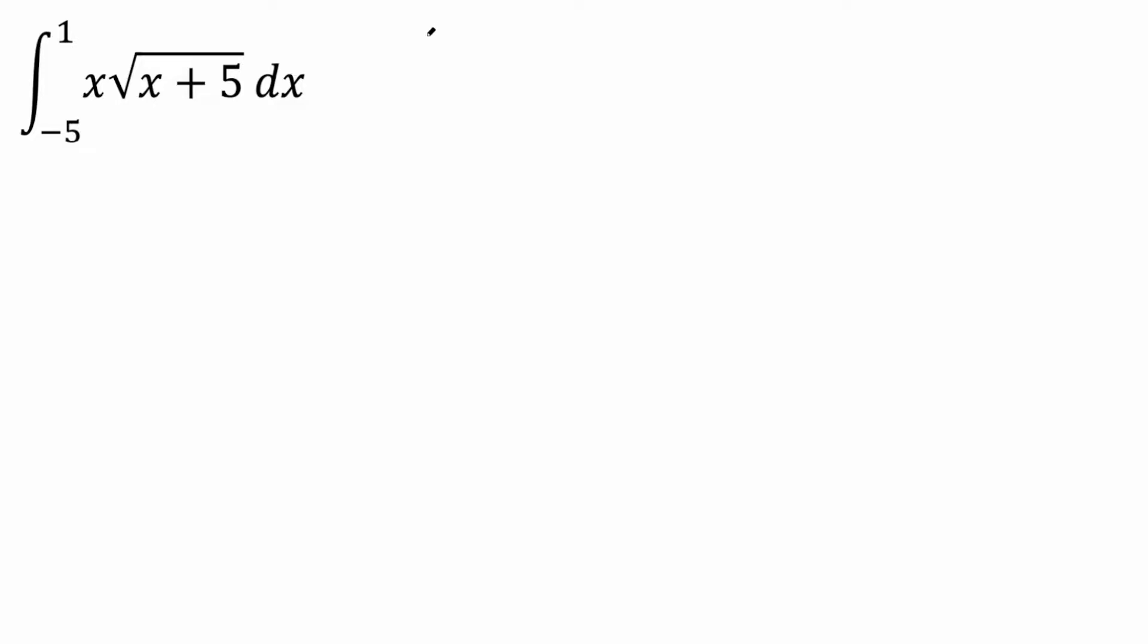The way I'm going to approach this problem, I'm going to say that u equals this piece, so u = x+5. Then du would be the derivative, and the derivative of x is one, derivative of five is zero, so we just get dx.